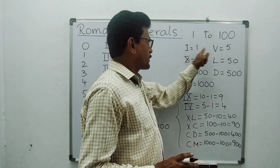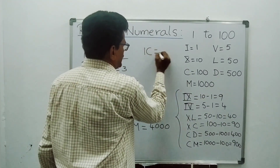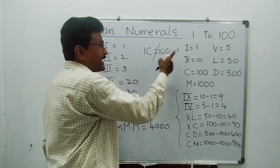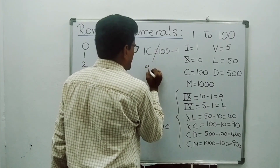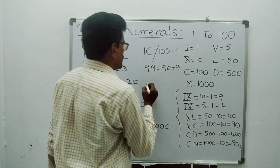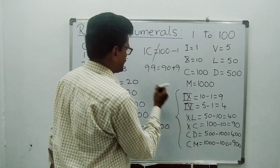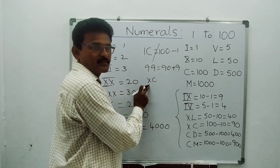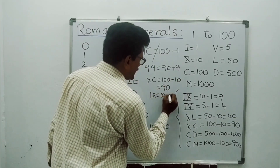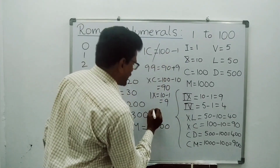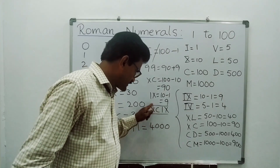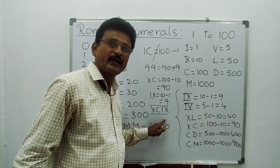Remember: I is subtracted from V and X only. If someone writes IC, that would be 100 minus 1 — this is always wrong. For 99, we write it as 90 plus 9. XC is 100 minus 10 = 90; IX is 10 minus 1 = 9. So 99 is written as XCIX.